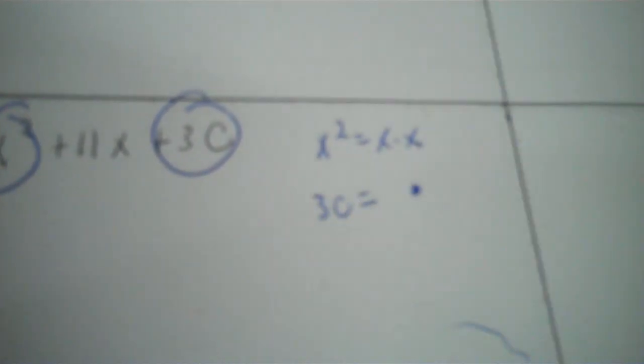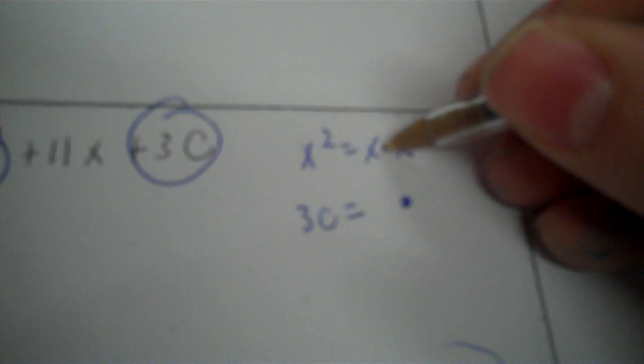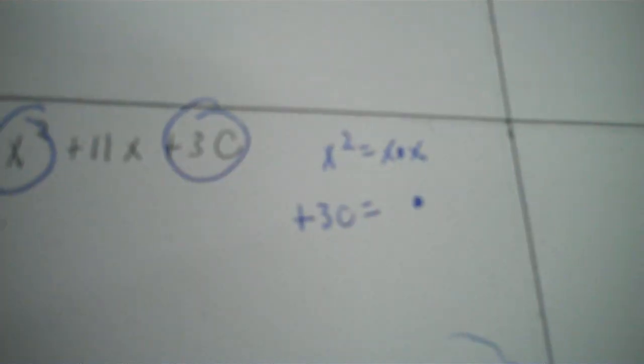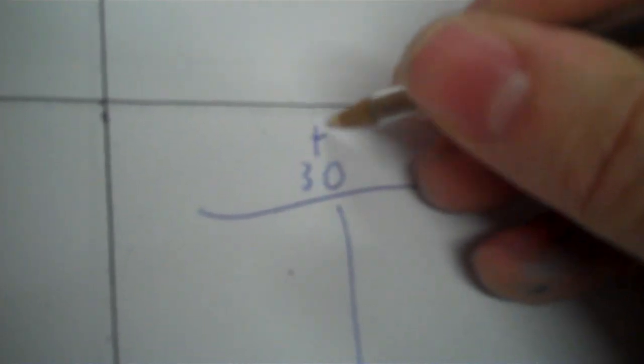Then here, x second plus 11x plus 30. So x second is x times x, and then 30 equals we don't know, so it's gonna be x, x. Now 30 is positive, so if it's positive it's a match. The signs of x have to match. So put two signs up, negative on each side, and you're adding to what's in the middle, which is positive 11.